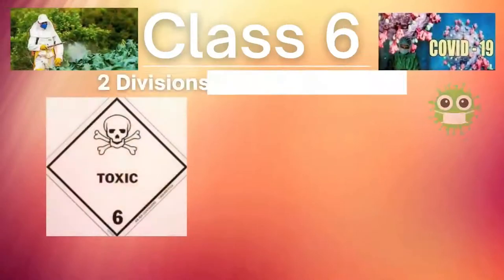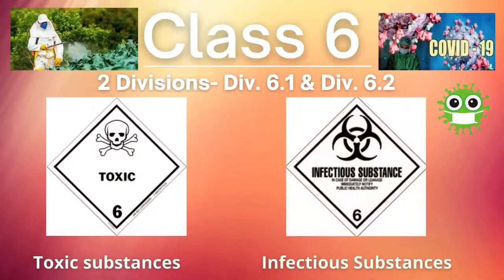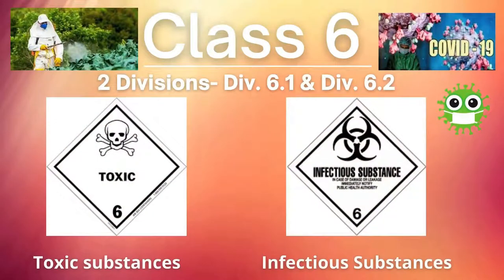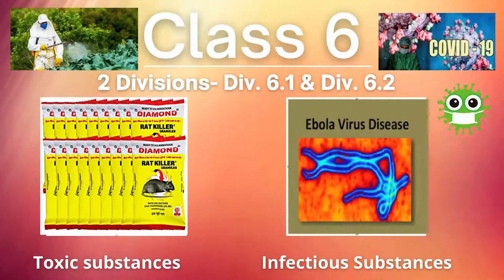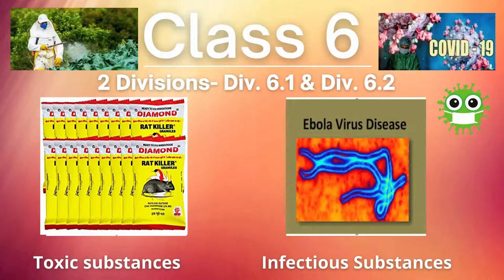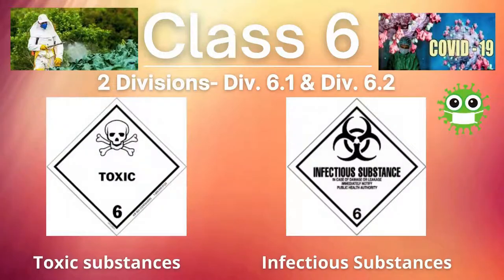Next is Class 6. It also has two divisions: Toxic Substances and Infectious Substances. For infectious substances, Coronavirus and Ebola virus are common examples.